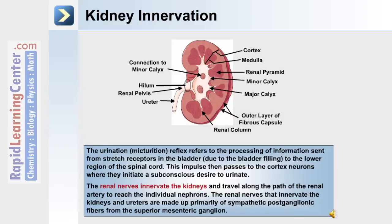Kidney innervation. The urination or micturition reflex refers to the processing of information sent from stretch receptors in the bladder to the lower region of the spinal cord. This impulse then passes to the cortex neurons where they initiate a subconscious desire to urinate. The renal nerves innervate the kidneys and travel along the path of the renal artery to reach the individual nephrons. The renal nerves are made up primarily of sympathetic postganglionic fibers from the superior mesenteric ganglion.